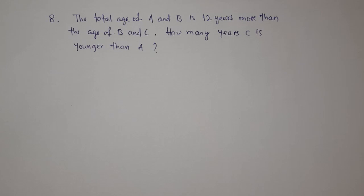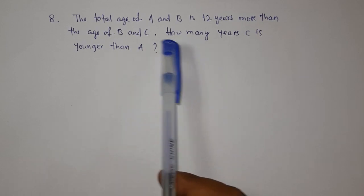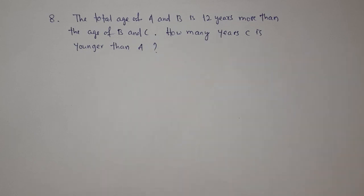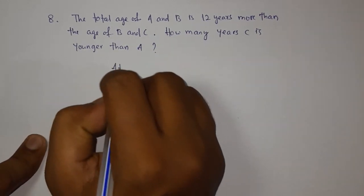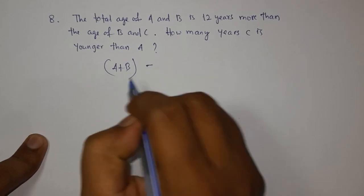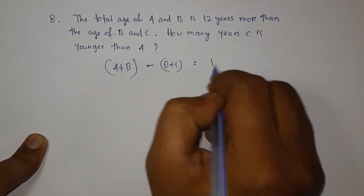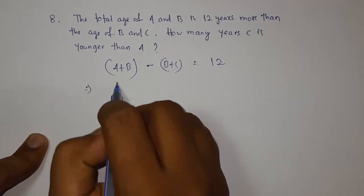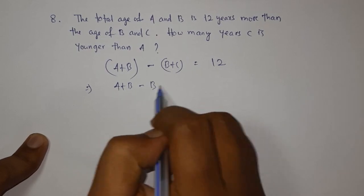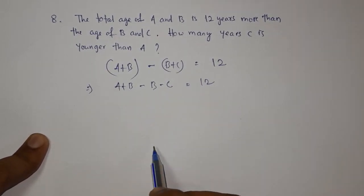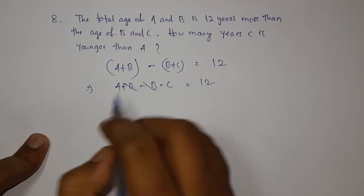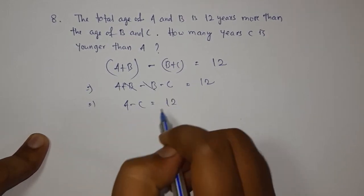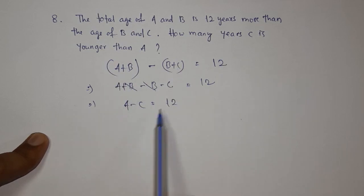Next question: the sum of ages of A and B is 12 years more than the sum of ages of B and C. How many years is C younger than A? The difference: (A plus B) minus (B plus C) equals 12. Simplifying: A minus C equals 12. So C is younger than A by 12 years.